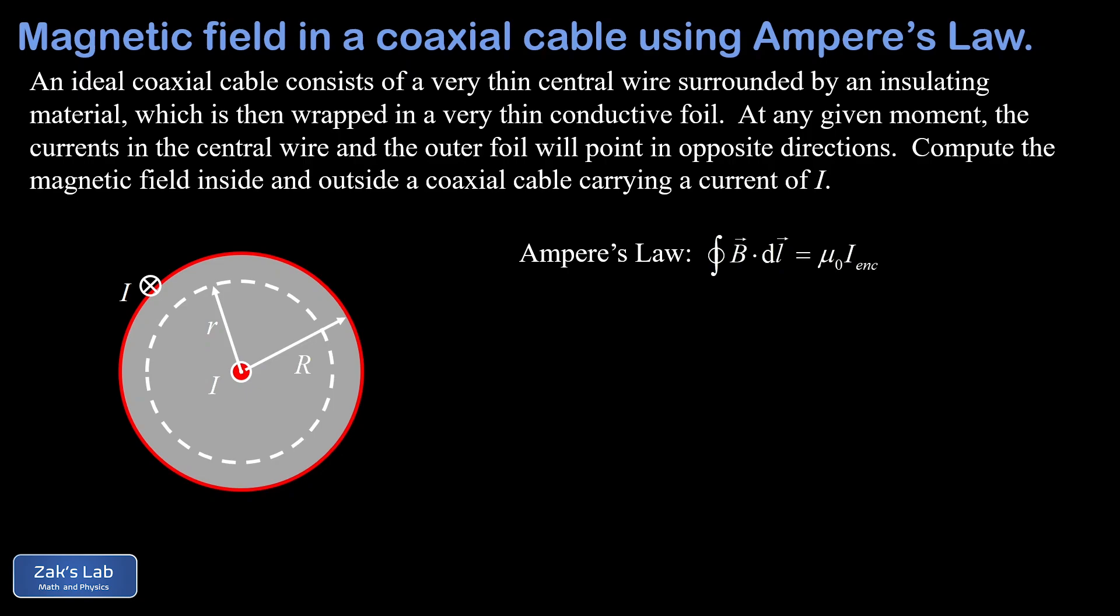The magnetic field swirls counterclockwise, which means at any point inside the cable we expect it to be tangential to our circular Amperian loop. The path increments dl are tangential to the loop because those are just infinitesimal segments of the loop itself. By putting dl in that counterclockwise direction, we're computing the path integral counterclockwise, ensuring that we get a positive result for our magnetic field.